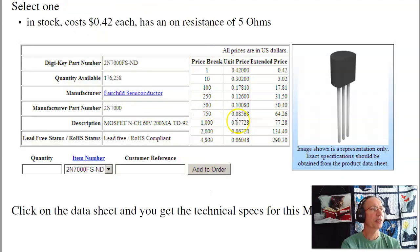And then picking one, here's one I pick kind of arbitrarily. This is a 42-cent MOSFET in bulk at 6 cents, and has an on-resistance of 5 ohms.